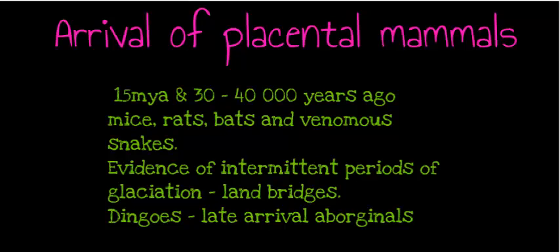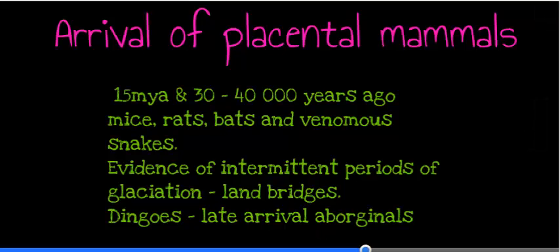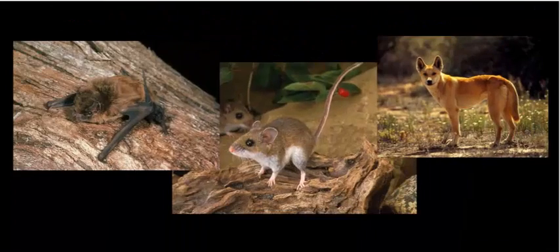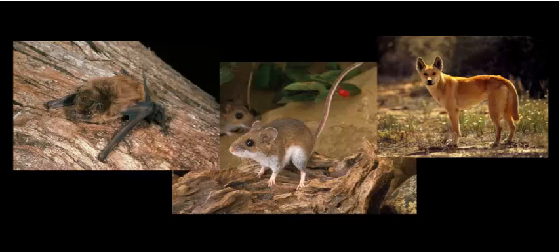Environmental change continued with the arrival of the first humans into Australia, with dingoes appearing about 40,000 years ago, which would have had a dramatic impact on the organisms in Australia. We can see a microbat, a native mouse, and the dingo as examples of these arrivals.